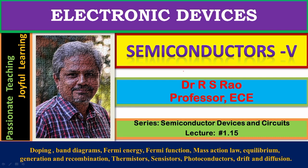Semiconductor materials like silicon, germanium, and gallium arsenide are used to fabricate electronic devices like p-n junction diodes, bipolar junction transistors, and field effect transistors. The behavior, functioning, and performance of all these devices depend upon the semiconductor material that goes into making them.